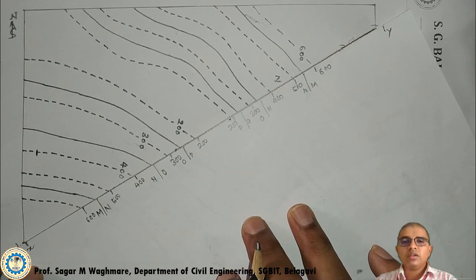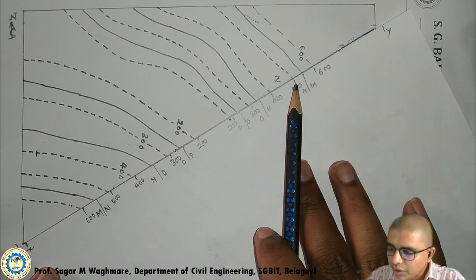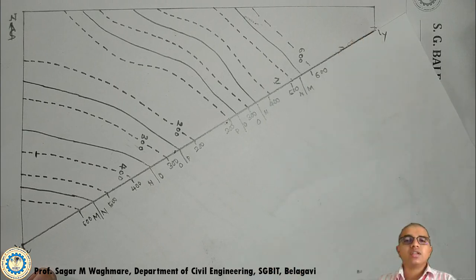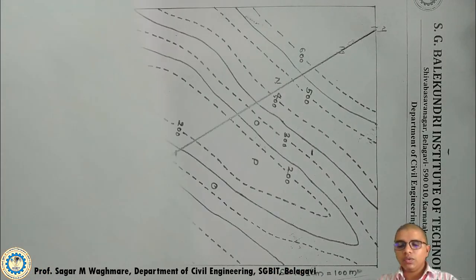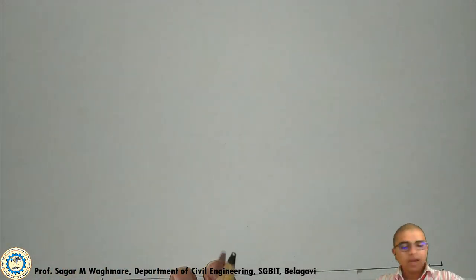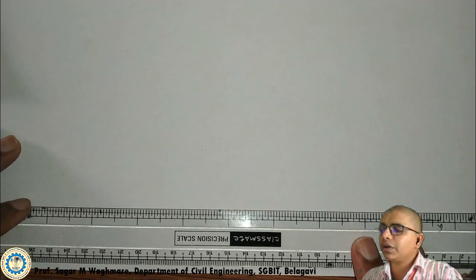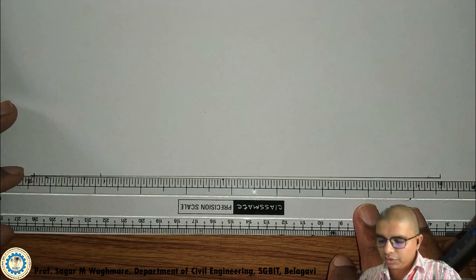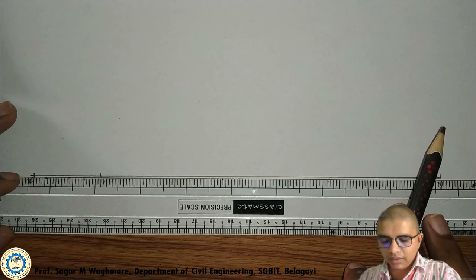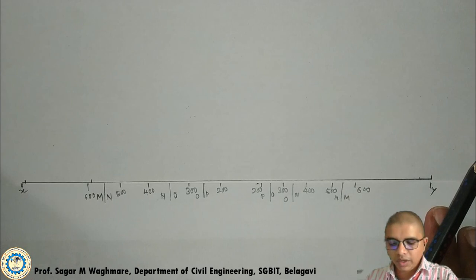Now let us check that we have copied down almost all the points. Once we complete copying, we take a white sheet and draw the X-Y line on it. I have already drawn the X-Y line here. I took a scale, measured from the bottom, coincided my scale with the bottom plane, drawn a line, and plotted the X and Y points.